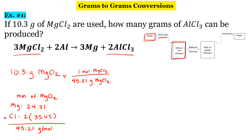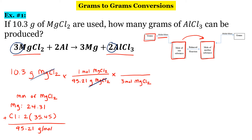First step's done — our units are going to cancel out here. Our next step is to go from moles of magnesium chloride to moles of aluminum chloride. For this, we're going to use a mole ratio. We have a three-to-two ratio, so for every three moles of magnesium chloride, we have two moles of aluminum chloride. Our units of moles of magnesium chloride will now cancel.